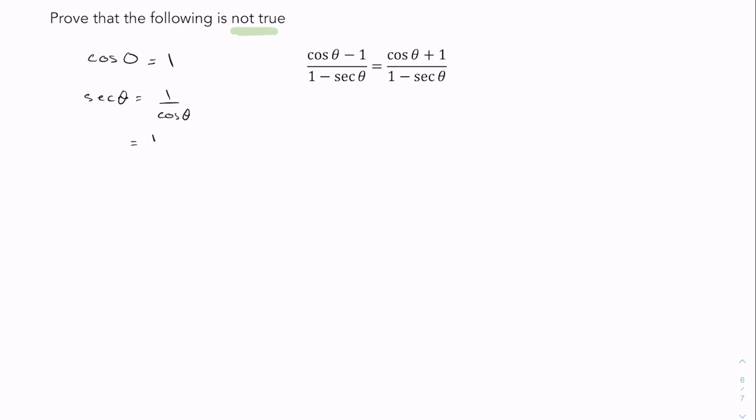So let me look at the left side first. The left side is going to be cos theta minus 1, namely cos 0, so cos of 0 degrees minus 1 over 1 minus secant 0 degrees is going to be 1 minus 1 over 1 minus 1, which is equal to 0 over 0, which by the way doesn't make sense but it's something, whatever it is.